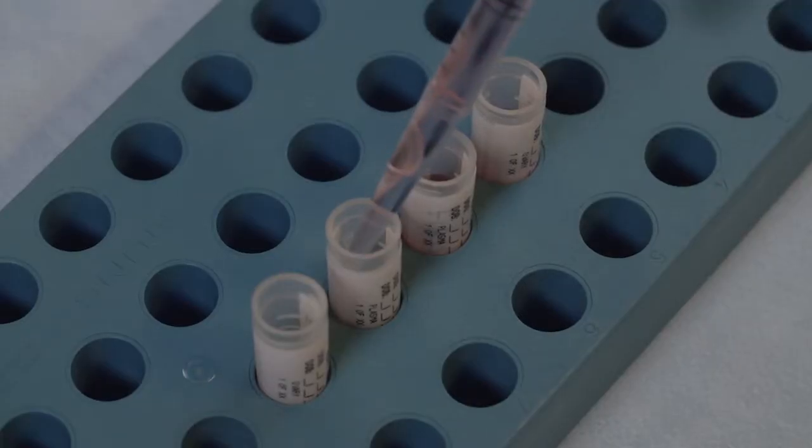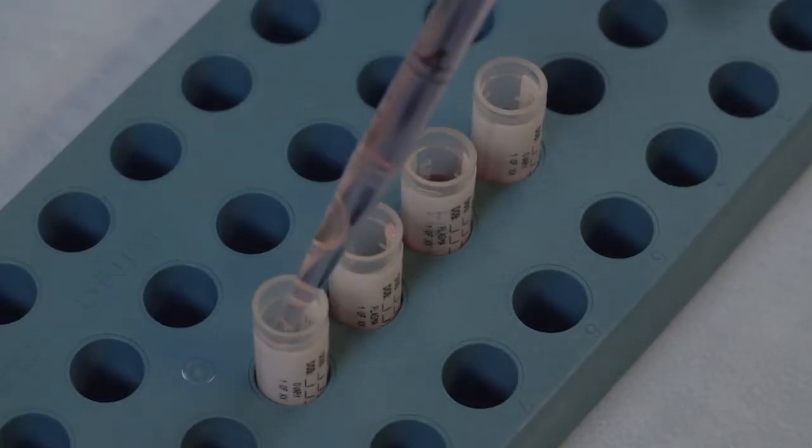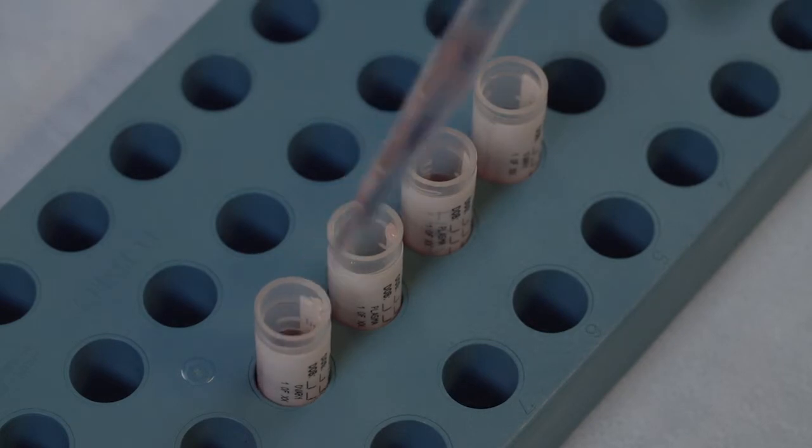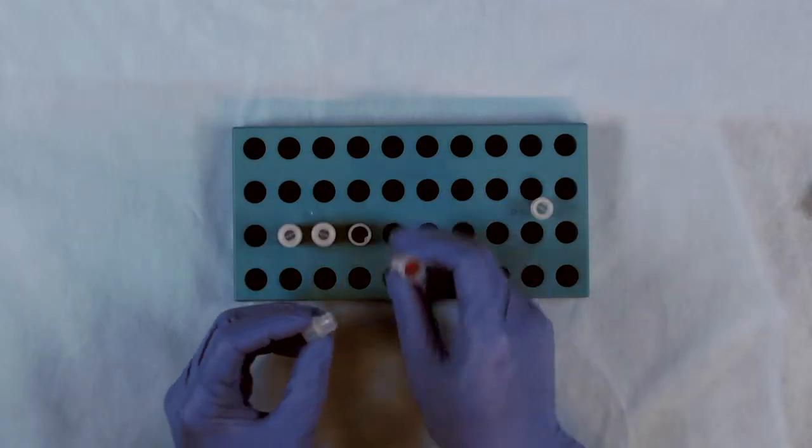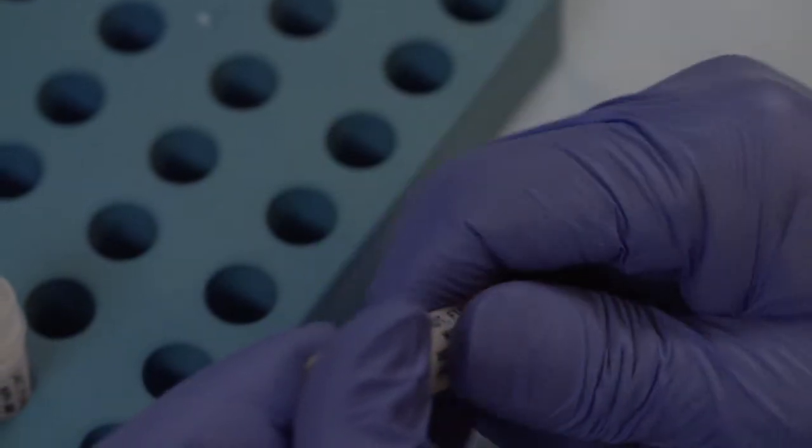Then add more cryomedia so that the final volume is up to 1.5 milliliters. Leave the vials in 4 degrees for half an hour and load the vials into the freezing machine.